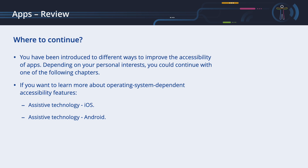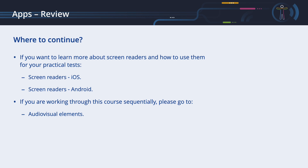You have been introduced to different ways to improve the accessibility of apps. Depending on your personal interests, you could continue with one of the following chapters. If you want to learn more about operating system-dependent accessibility features, we invite you to study Assistive Technology. If you want to learn more about screen readers and how to use them for your practical tests, we recommend Screen Readers for iOS and Screen Readers for Android. If you are working through this course sequentially, please go to Audio Visual Elements.